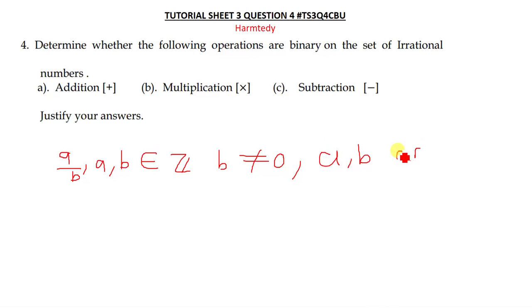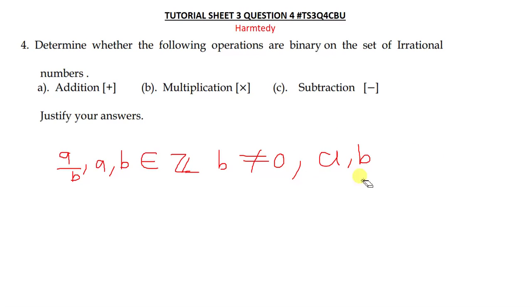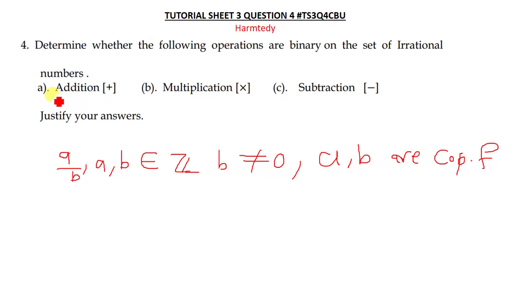So these are numbers that cannot be expressed in the format a over b. They cannot be expressed as a fraction where a and b are members of integers, b is not equal to zero, and a and b are supposed to be co-prime factors.